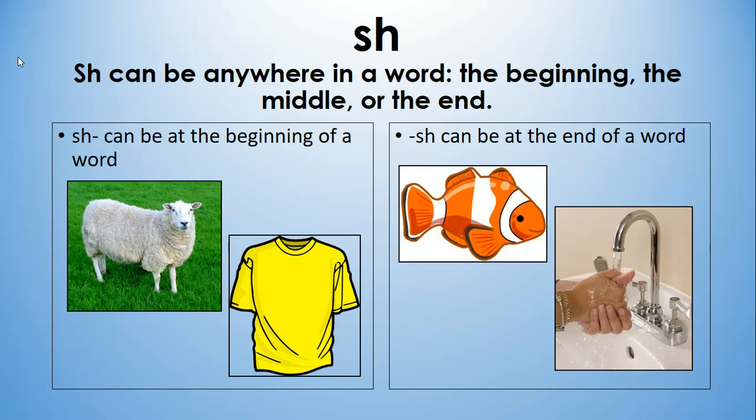SH can also be used anywhere in a word. It can begin words like sheep and shirt. It can end words like fish and wash. And just like CH, it can be in the middle of words, but it's frequently when there's an ending added, like fishing, washed.